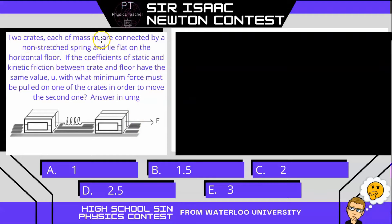In this question, we have two crates, both with the exact same mass M. They're connected by a spring which initially is not stretched, and they lie flat on a horizontal floor. There is friction with coefficient mu. With what minimum force must we apply on one crate so that we can just start moving the second crate? We need our answer in terms of mu, M, and G.